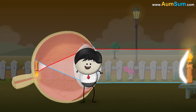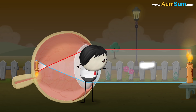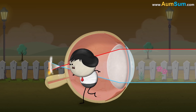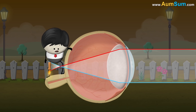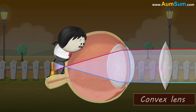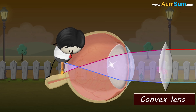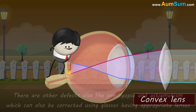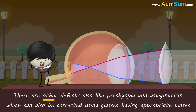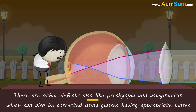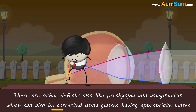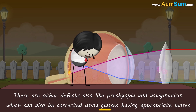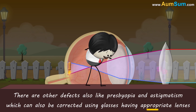Whereas, when light gets focused behind the retina, the defect is called hyperopia or hypermetropia. Hypermetropia can be corrected using glasses having convex lenses. Apart from these, there are other defects also like presbyopia and astigmatism, which can also be corrected using glasses having appropriate lenses.